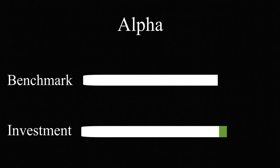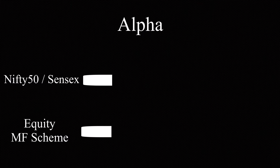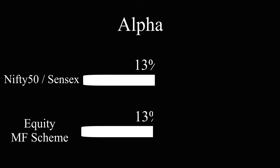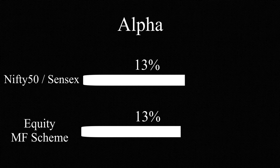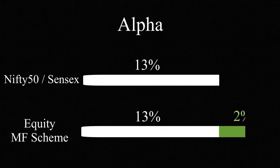So what is Alpha? Alpha is the excess return generated over and above the benchmark by any investment — in this case, any equity mutual fund or particular stock. So if a mutual fund scheme gave an average annual return of around 15% for 5 years, and during that same period the Nifty 50 or Sensex gave an average annual return of 13%, then the Alpha would be 2%, which paints a positive picture for the fund manager as they were able to beat the benchmark.